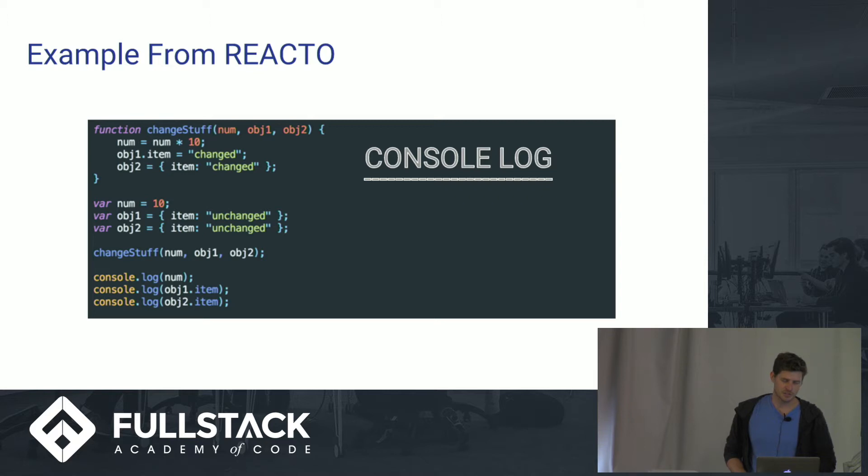And then we were calling this change stuff function, which we were passing the variables into. And if you look at the change stuff function, we were multiplying num by 10, setting an equal to itself. Object 1, we were setting its item property to changed. And object 2, we were setting this equal to a new object with an item property set to changed. And here's what we actually reported out.